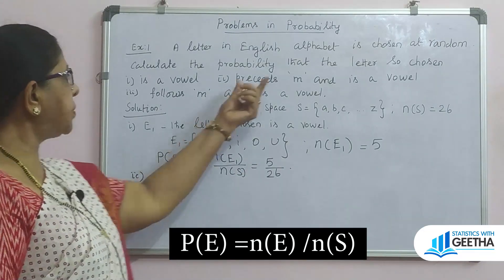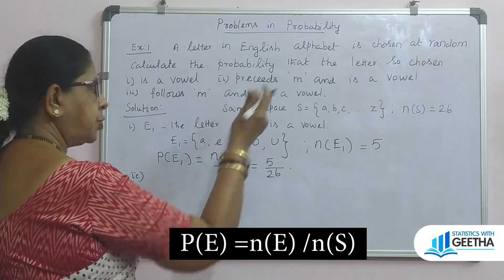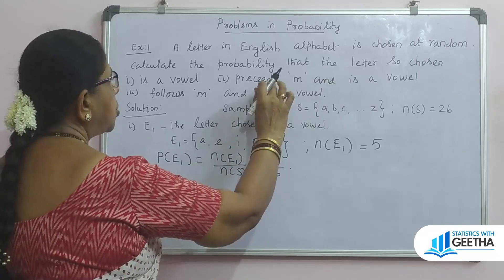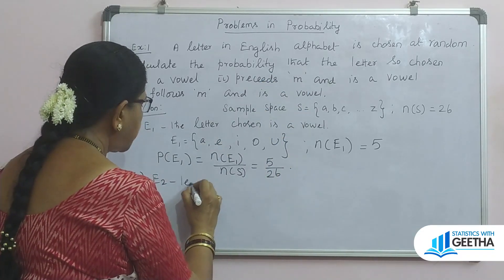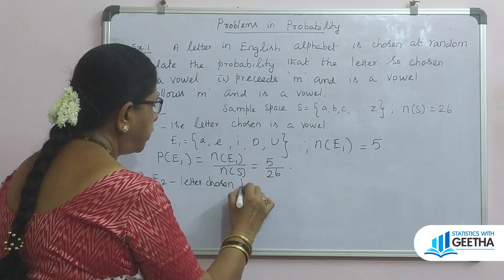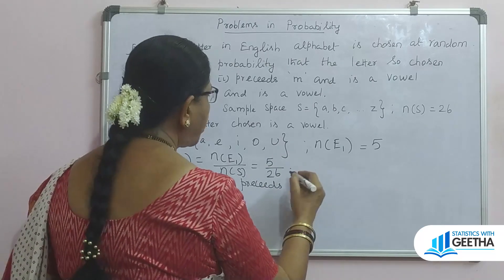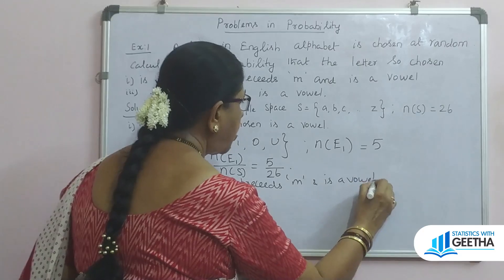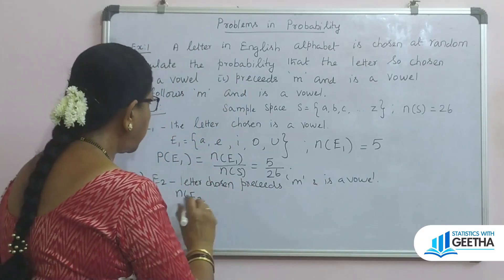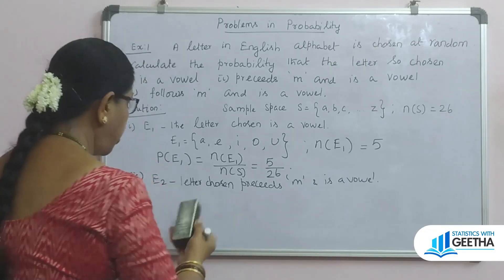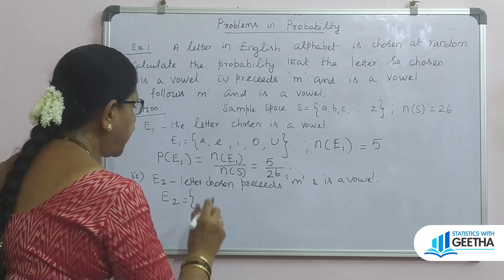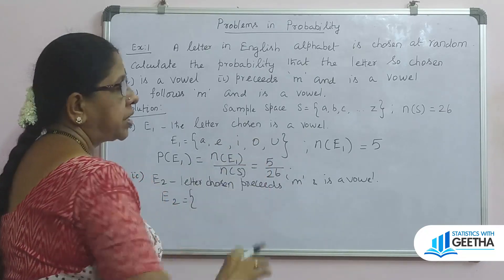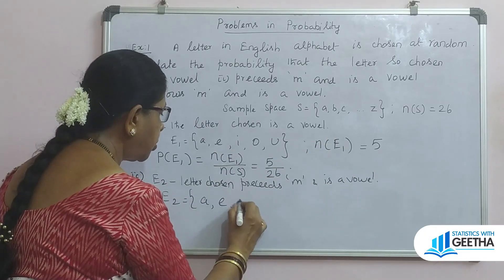For the second subdivision, let E2 be the event that the letter chosen precedes M and is a vowel. The letters that precede M are A through L, and among those we identify the vowels.